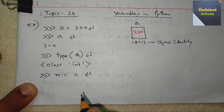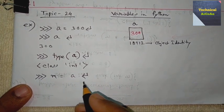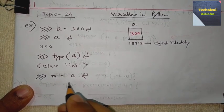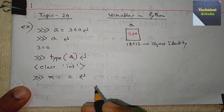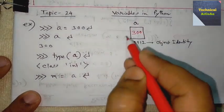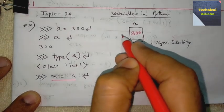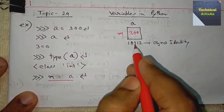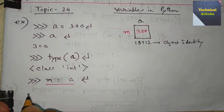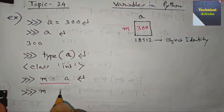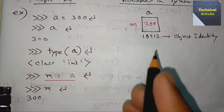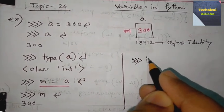Now suppose we write m = a. In this case, Python does not create another integer object. It simply creates a new symbolic name or reference m, which points to the same integer object that a points to. So both a and m reference the same single object. If we print m, we get 300.